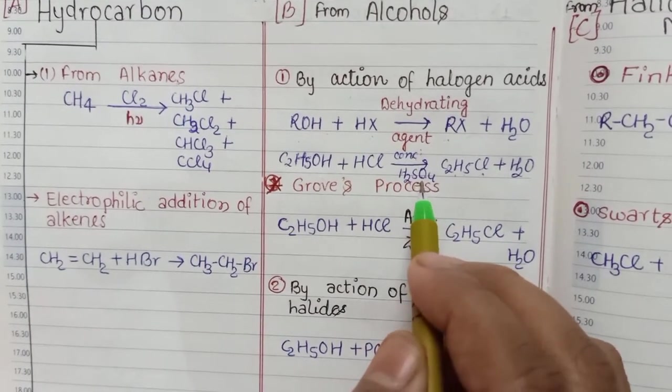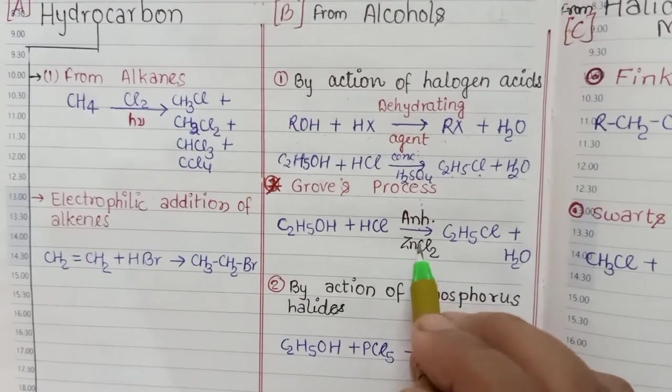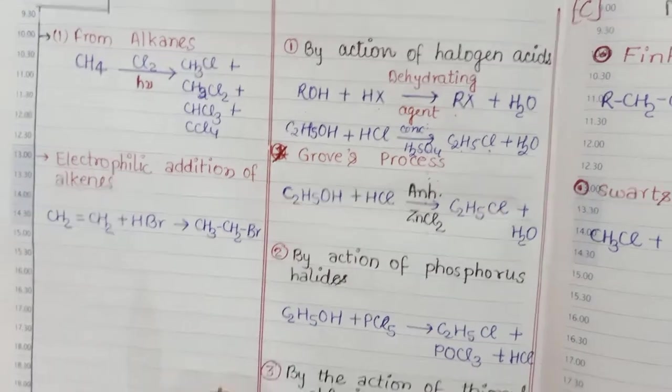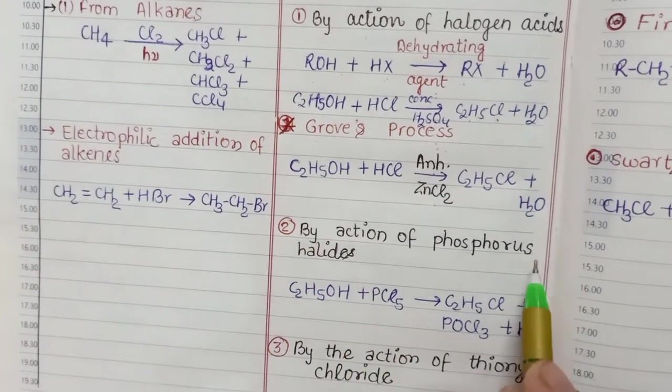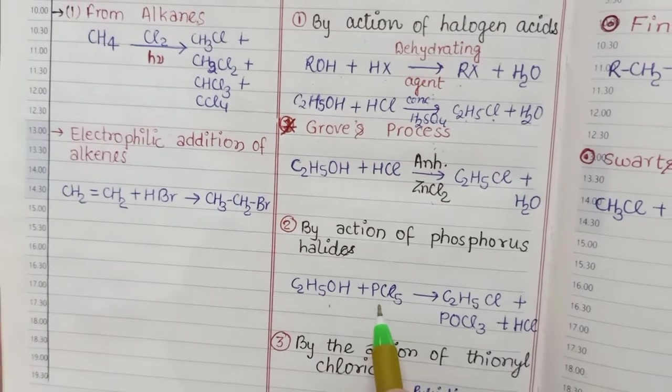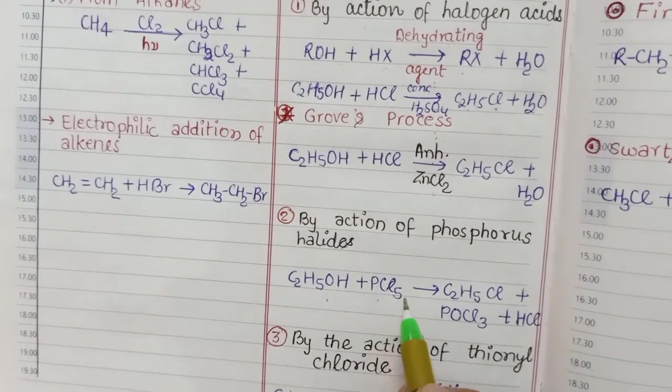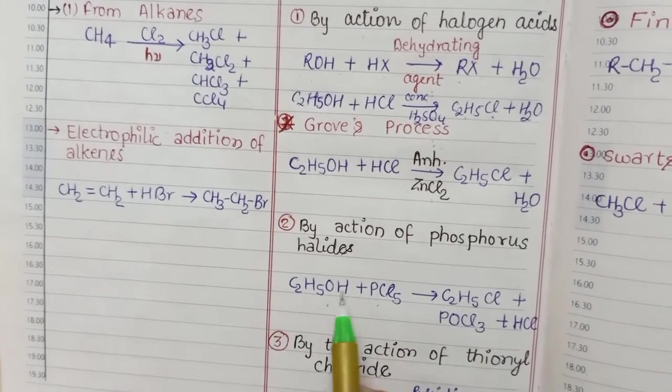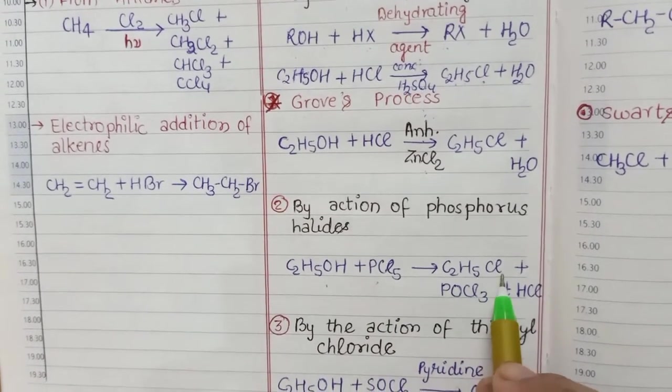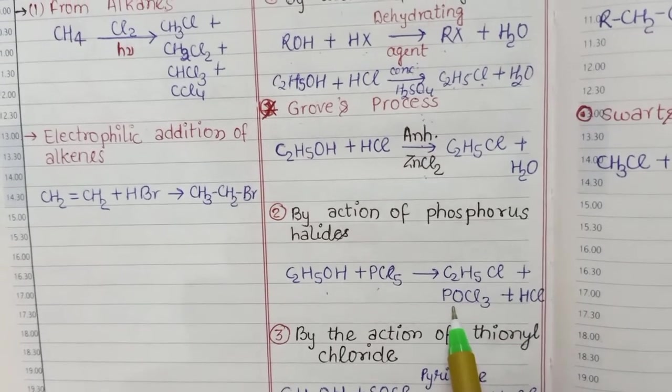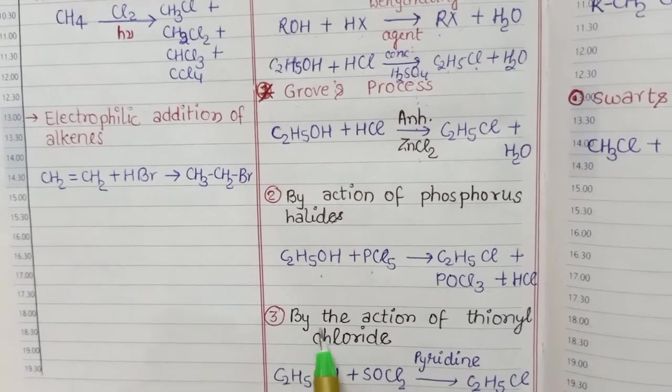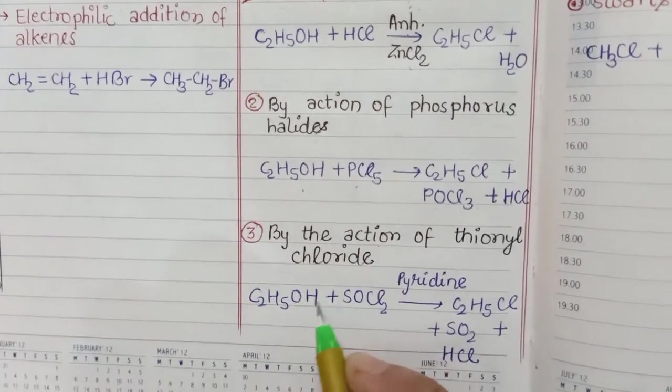Next, by the action of phosphorous halide, when ethyl alcohol reacts with PCl5 to form ethyl chloride and POCl3 and HCl.